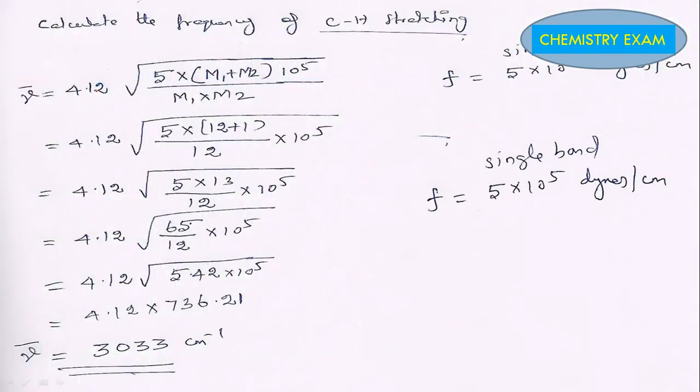One example we will see: calculate the frequency of C-H stretching. So here, C single bond H means F equals 5×10^5. We use 4.12, the F value, and then the μ value. M1×M2 divided by M1+M2. This M1+M2 will go to the numerator.